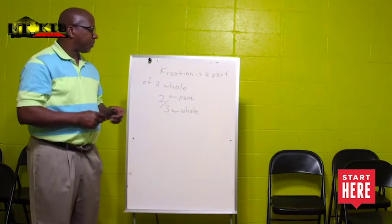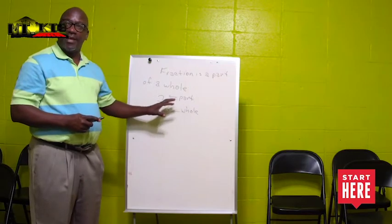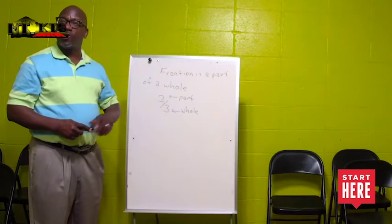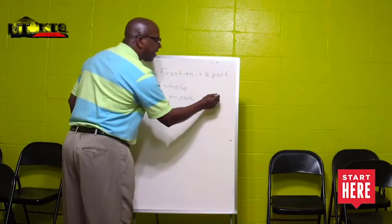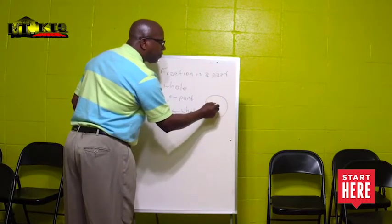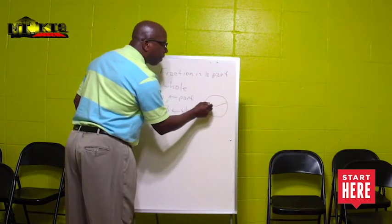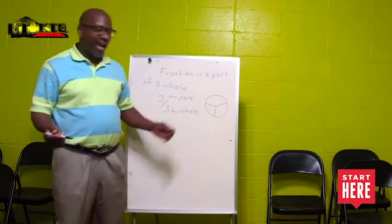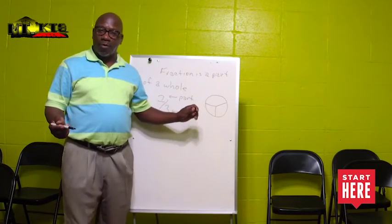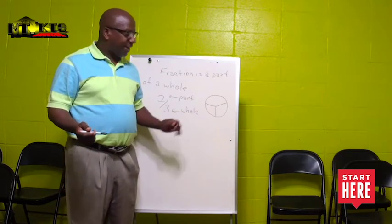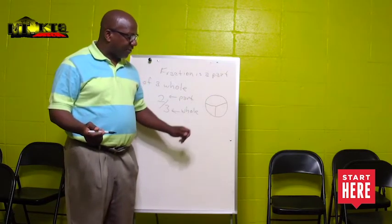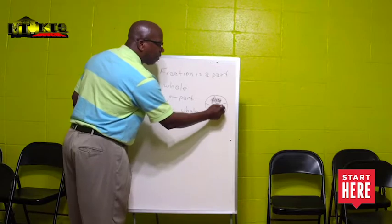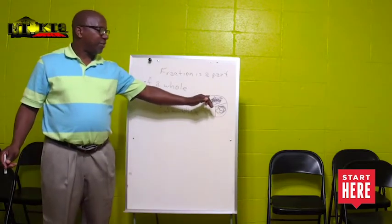For example, the fraction two thirds. Three is the entire amount of the whole, whereas the two tells you the part you're concerned about. If we take this circle and say it's three equal parts, the two tells me the parts I'm concerned about — this ratio, the two.